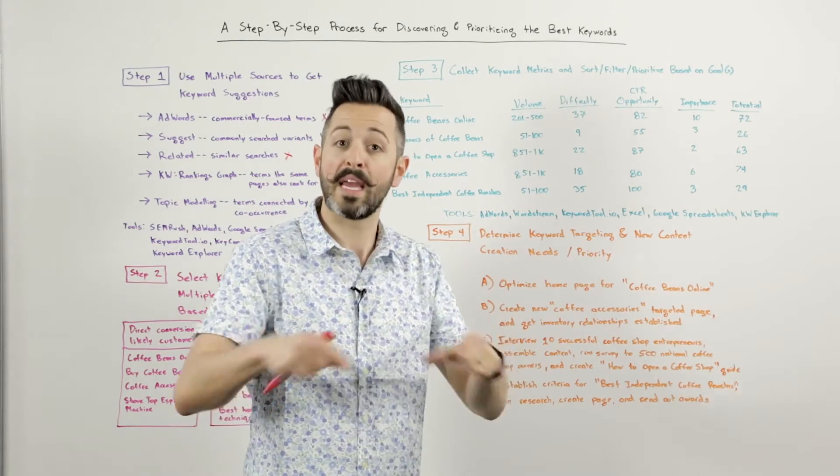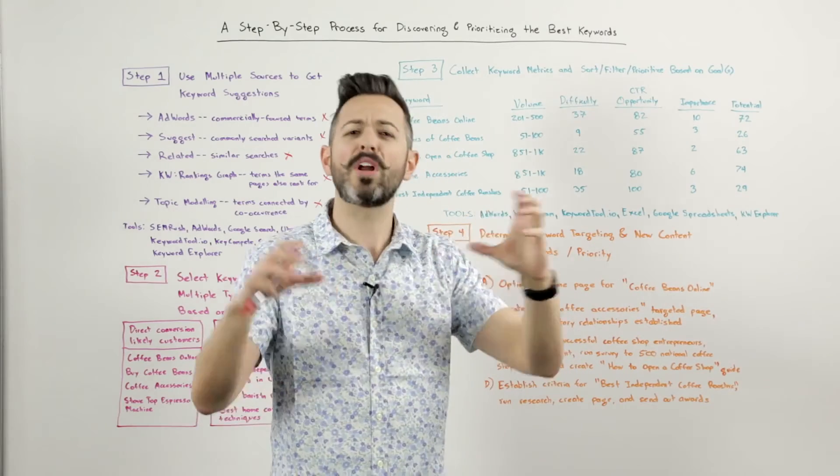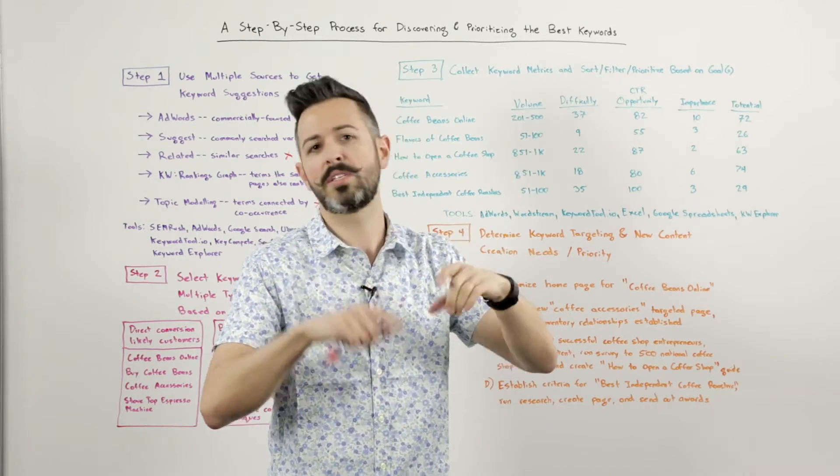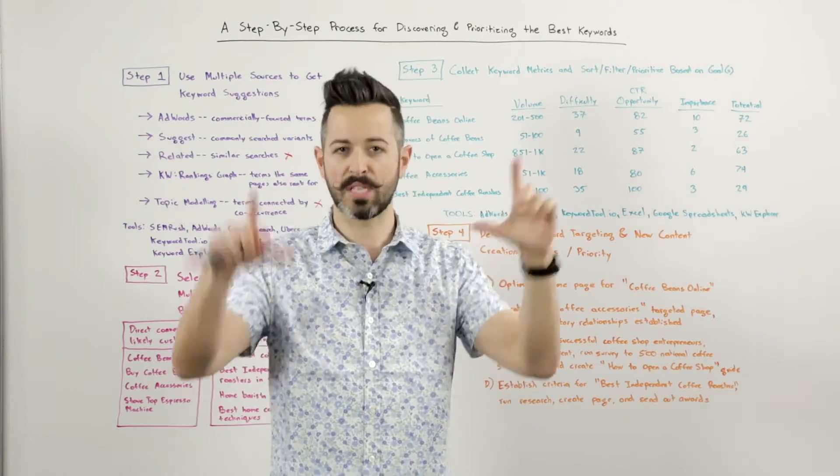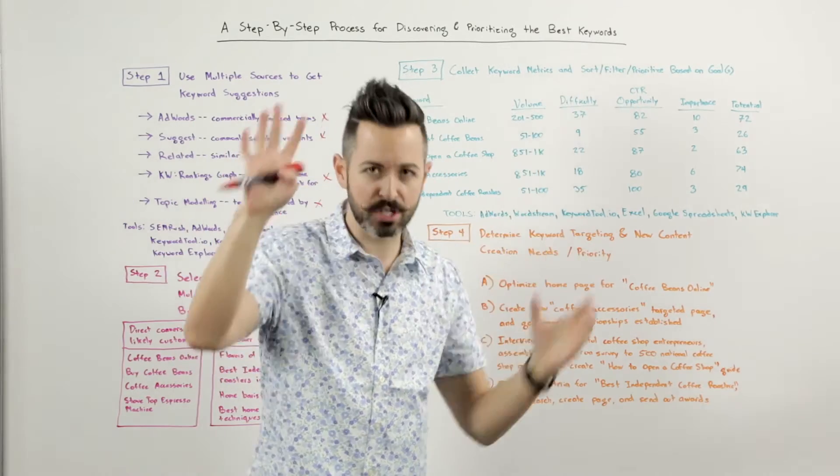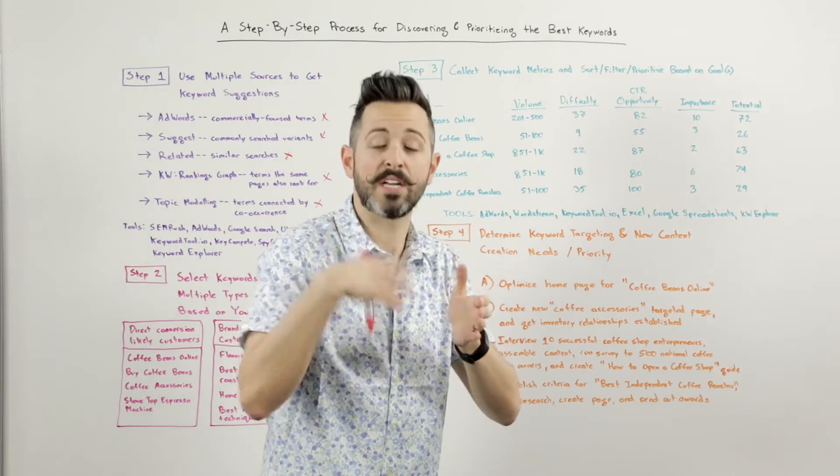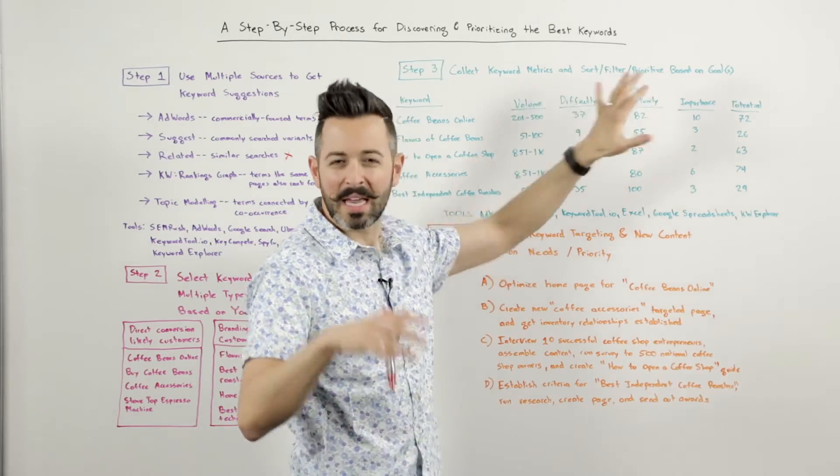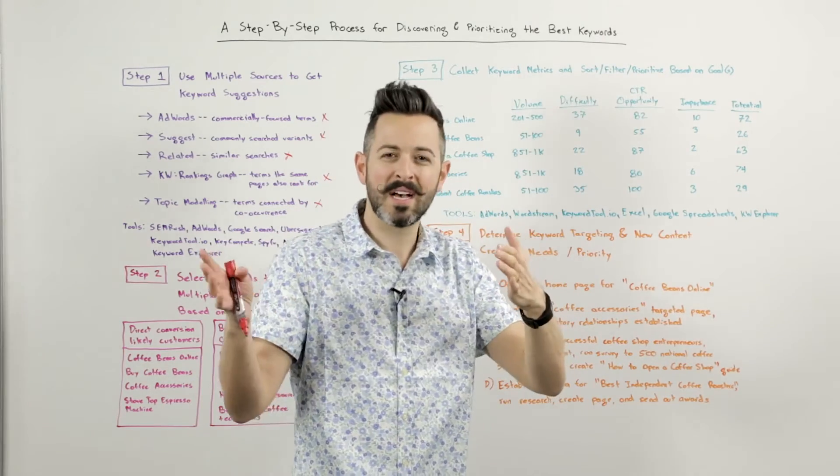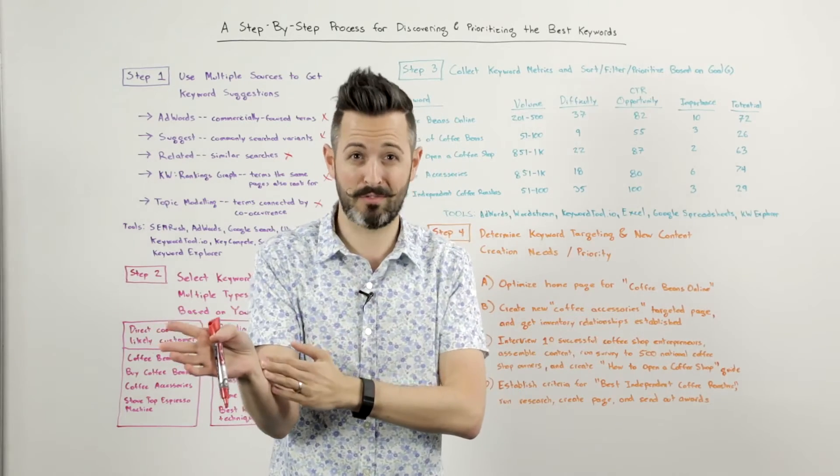I have my volume, how much are they searched for? Difficulty, how hard will it be to rank in the organic results? Click-through rate opportunity, meaning what other features are in the search results, images, news boxes, ads, videos up at the top, instant answers, knowledge graph on the right-hand side. That's going to draw clicks away from my potential to get searchers to click on my result. I need click-through rate opportunity in my scoring, otherwise I might be biased to keywords that look great but in fact get very little click-through rate.